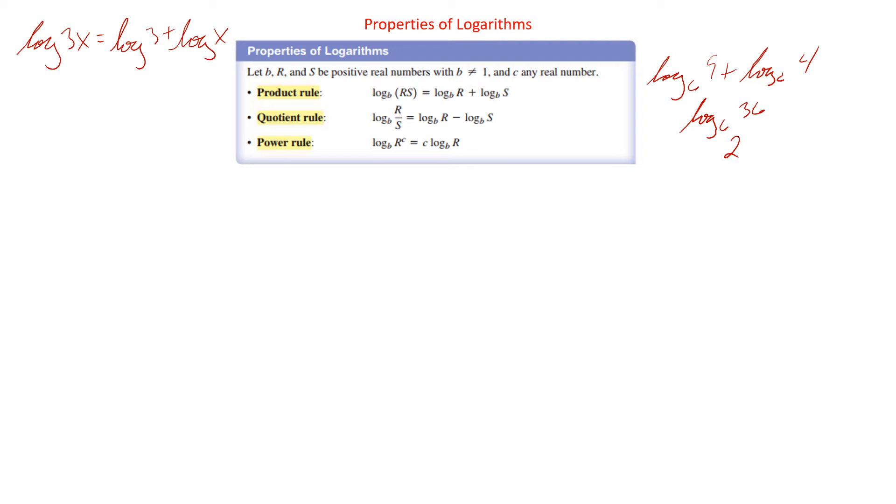Quotient rule is the same thing except we're dividing and subtracting. So we add for products, we divide for quotients.